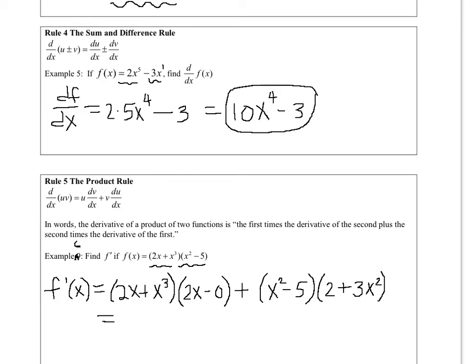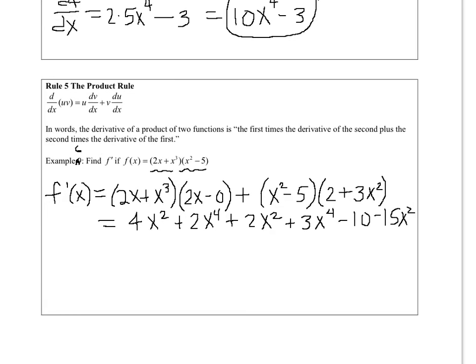So this is the first thing times the derivative of the second thing. Then you have to add the second quantity times the derivative of the first quantity. And again, we're going to use a whole bunch of other rules. 2x, that's linear. So if you take the slope of a linear function, you'll have just the constant in front. So this is going to be 2, plus, now your power rule, 3x^2. You can clean this up a little bit. It's really not needed, but if you want to distribute, this is going to be 4x^2 plus 2x^4. And then you would foil this monkey out. And this would be 2x^2 plus 3x^4 minus 10 minus 15x^2.